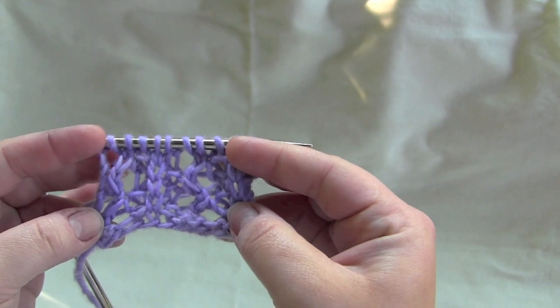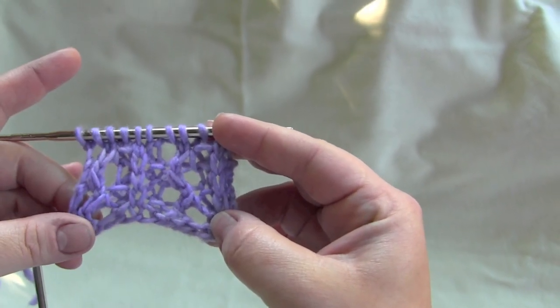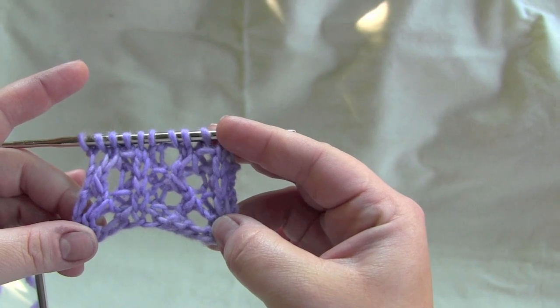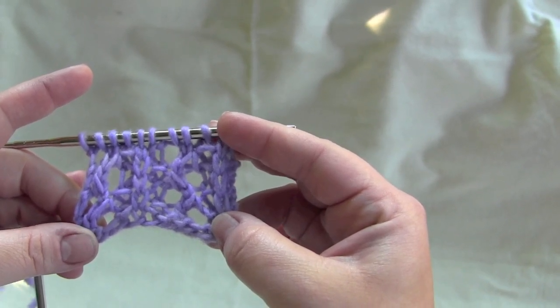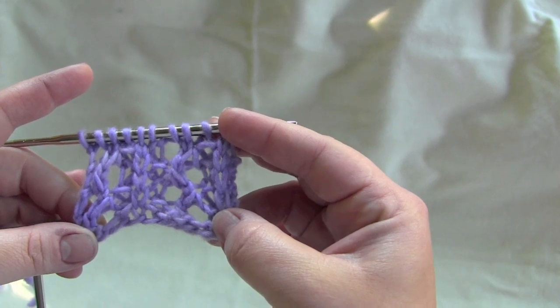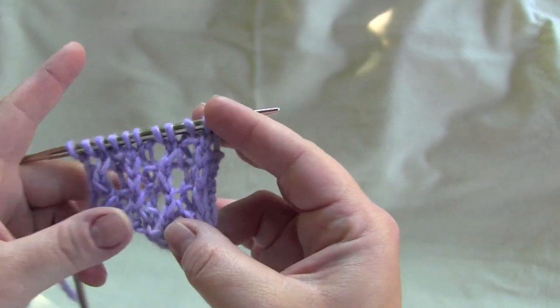This is a four-row repeat worked on a multiple of five plus one. For my sample here, I have eleven stitches. You'll need to know how to knit, knit in the stitch below, purl, yarn over, slip slip knit, and knit two together.